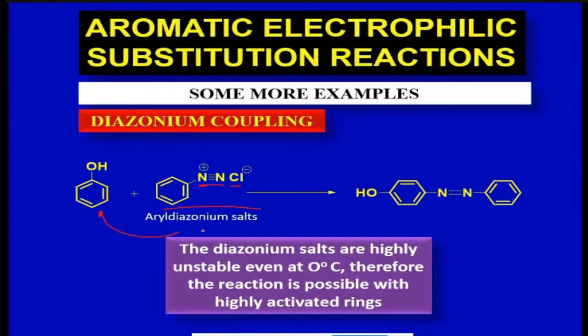At room temperature, the salt will dissociate and quickly get rid of the N2—nitrogen will leave as N2. So it's highly unstable at room temperature, and you have to reduce the temperature.